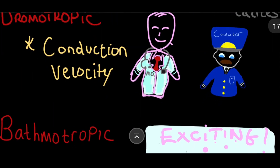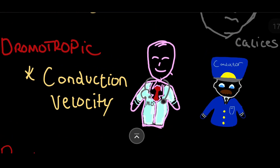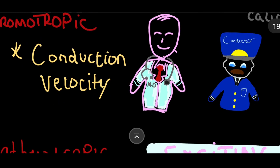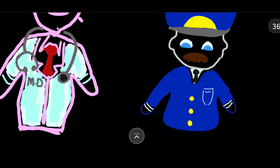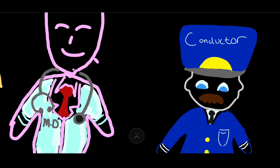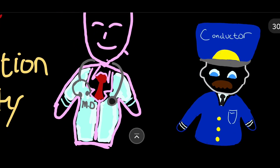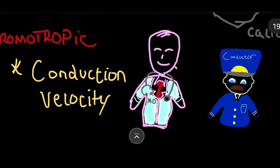Dromotropic. What are the first two letters of dromotropic? D, R — doctor. The doctor is in conversation with the conductor. And what is this all about? Conduction velocity. The doctor, D, R, is talking with the conductor, i.e. the conduction velocity.